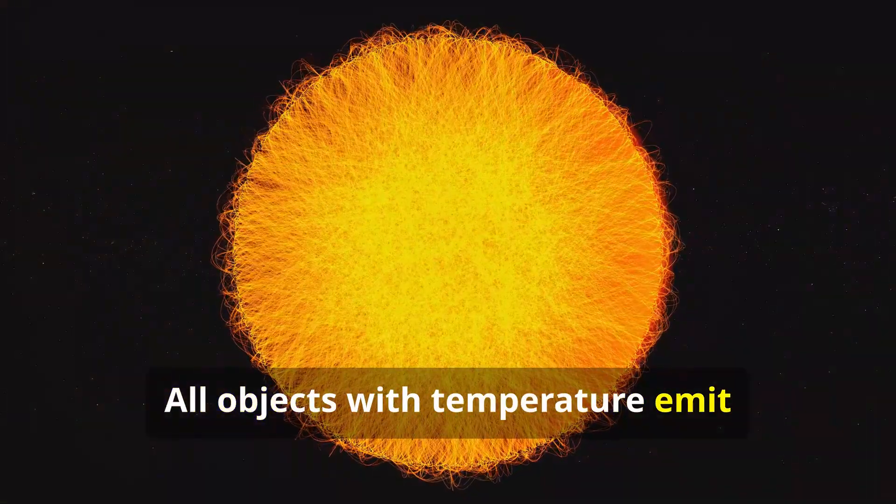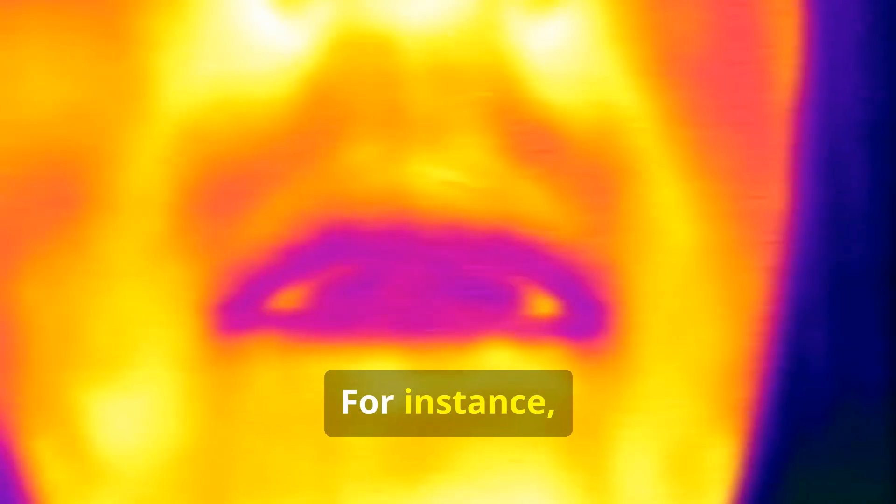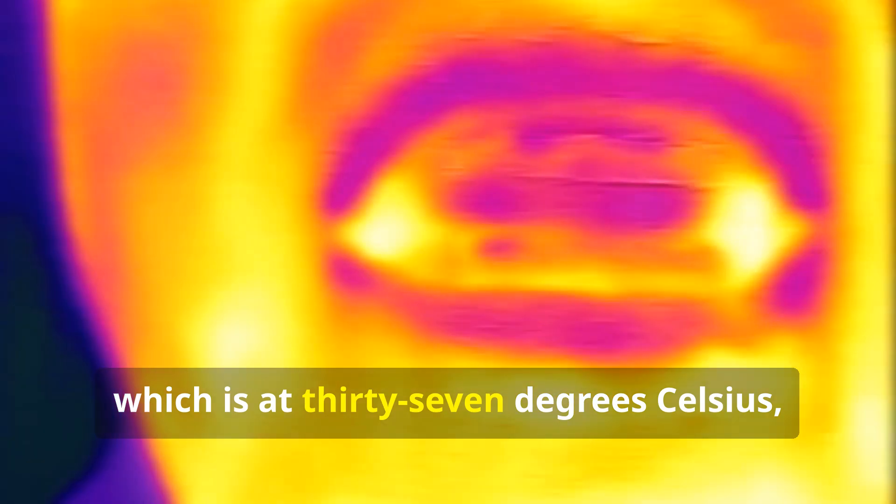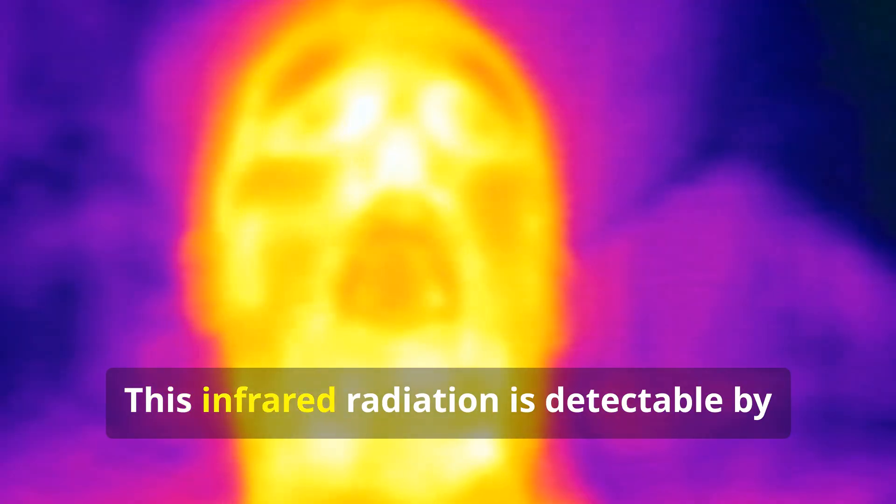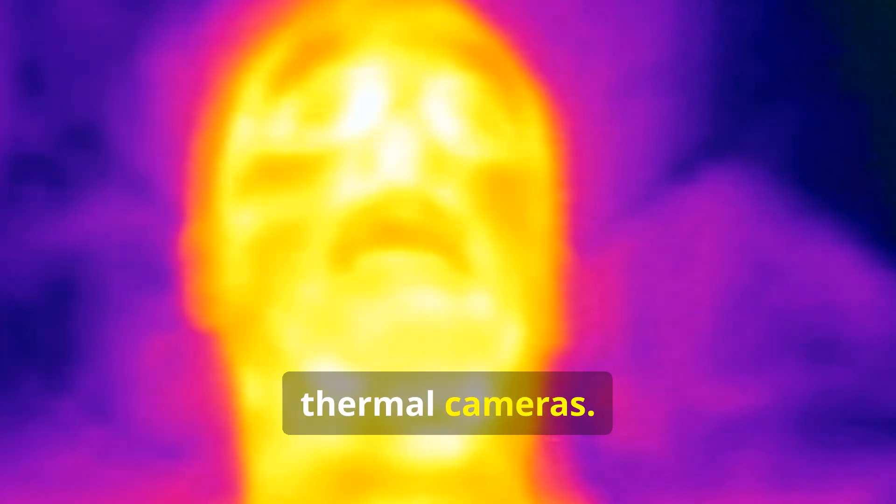All objects with temperature emit electromagnetic radiation. For instance, the human body, which is at 37 degrees Celsius, emits infrared radiation. This infrared radiation is detectable by thermal cameras.